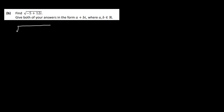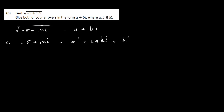Now let's look at part b. We have the square root of minus 5 plus 12i, and we've got to write that in the form a plus bi. What we can do is square both sides, so on the left-hand side we get minus 5 plus 12i, and on the right-hand side we get a squared plus 2aki plus k squared i squared.